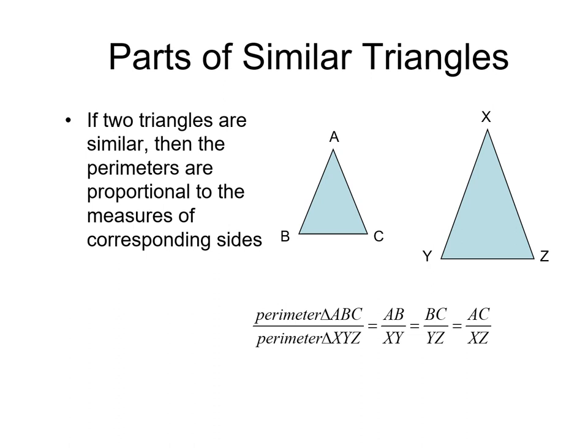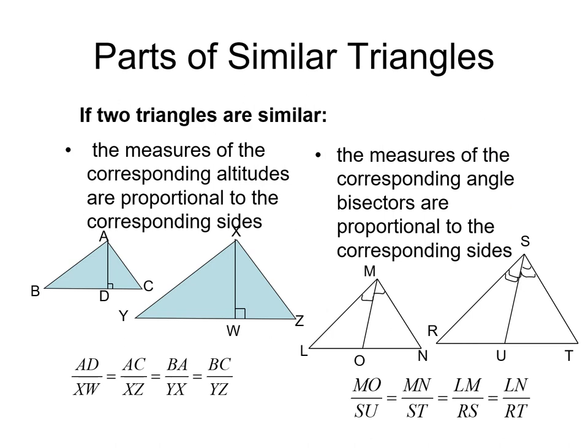So the perimeter of triangle ABC over the perimeter of the other triangle, which is XYZ, will be the ratio of corresponding sides. But if I'm talking about angles, we'll discuss the two angles later.